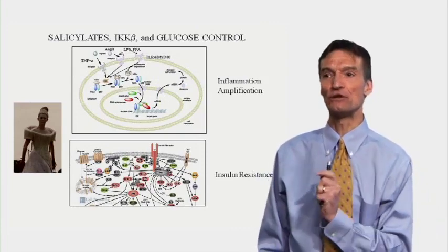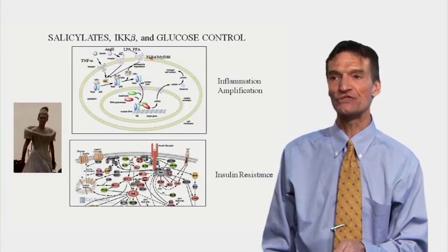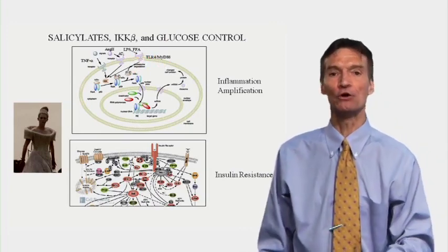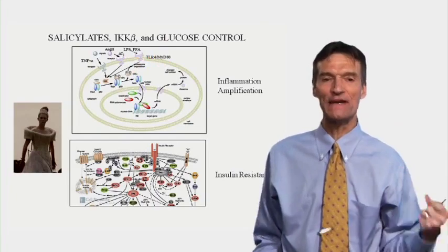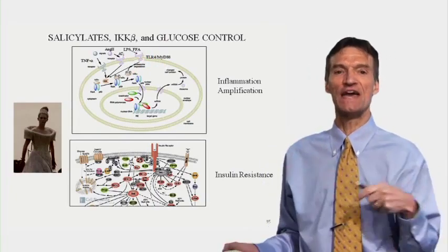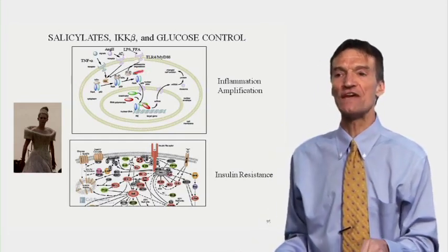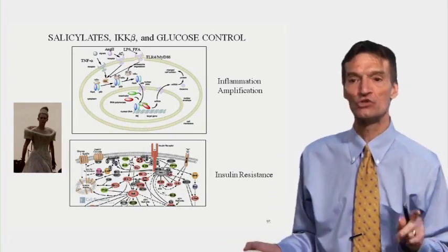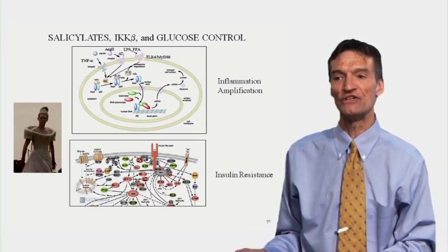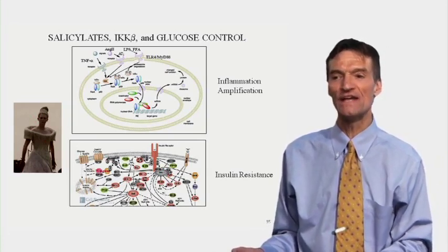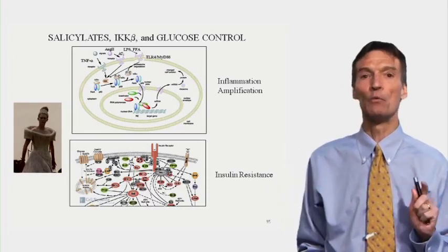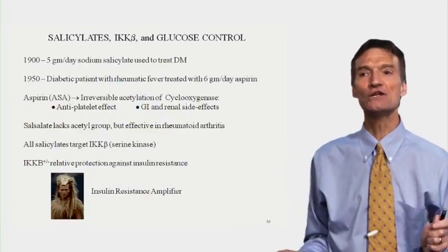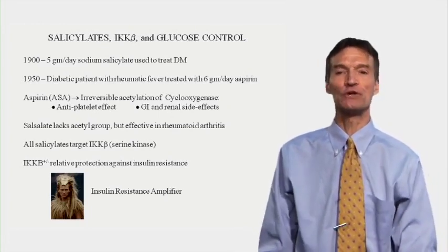Salicylates, Icpokinase, and glucose control. Ligation of the toll-like receptor with bacterial cell lipopolysaccharide or fatty acids from a high-fat or high-sugar meal mimics chronic infection. We activate Queen Jadis, who shoots nuclear factor kappa-beta into the nucleus to make bullets, and also promotes serine phosphorylation of the insulin receptor causing insulin resistance. We can block this with berberine or with aspirin. In 1900, high-dose sodium salicylate — essentially aspirin — was used in the treatment of diabetes. Doctors didn't understand how aspirin worked, but it did work.